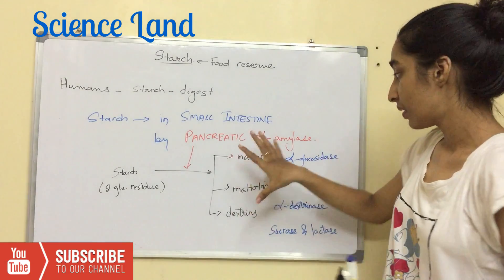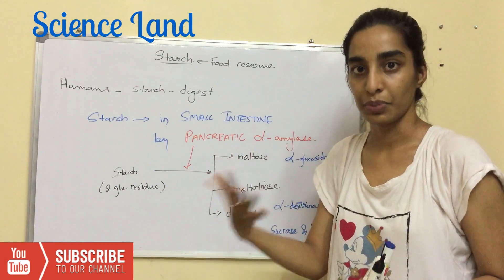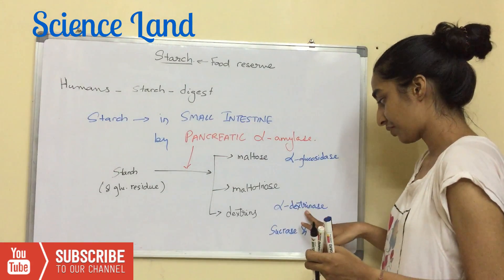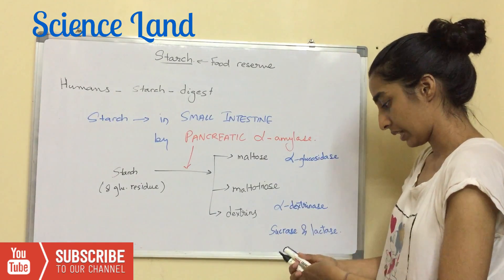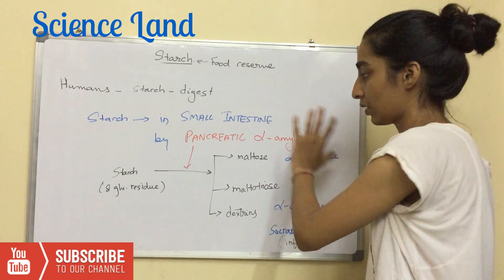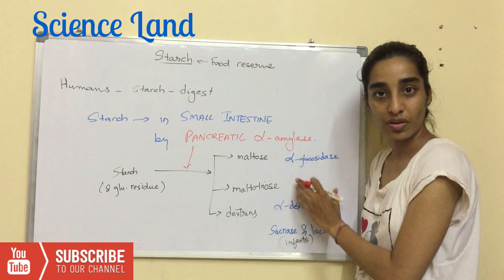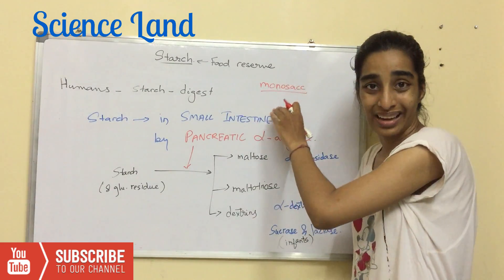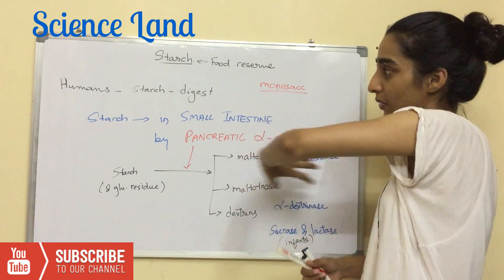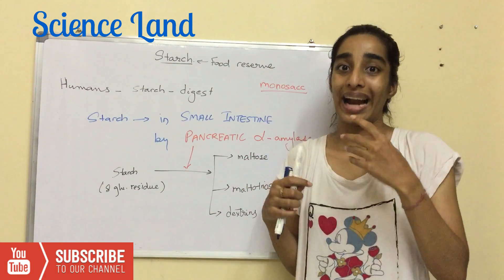Further enzymes from the brush border membrane of the intestinal mucosa are then released — including alpha glucosidase, alpha dextrinase, sucrase, and lactase in infants. These enzymes act on those molecules and break them down. The end result is that monosaccharides are absorbed by the intestine and transported to the blood. This is the basic mechanism of how humans digest starch.